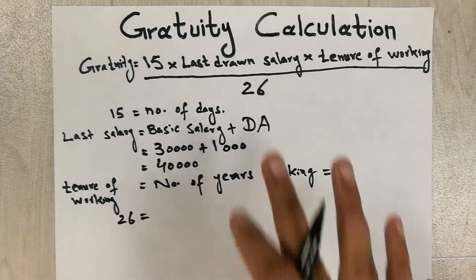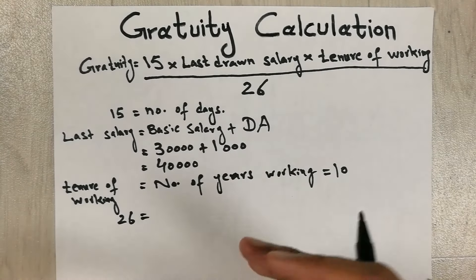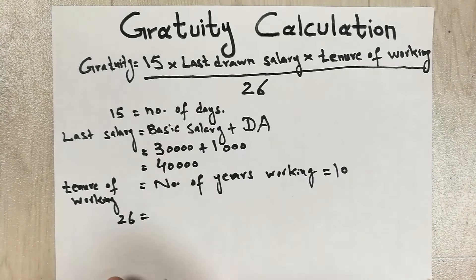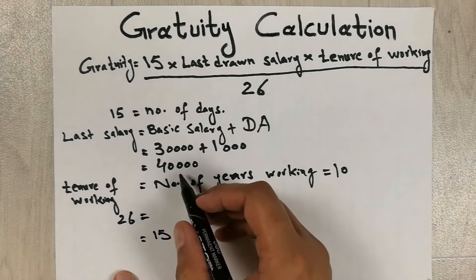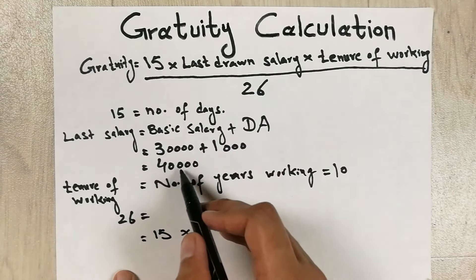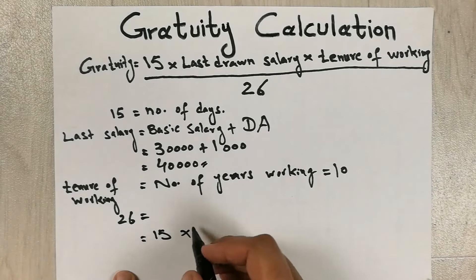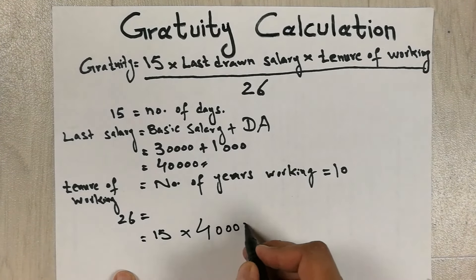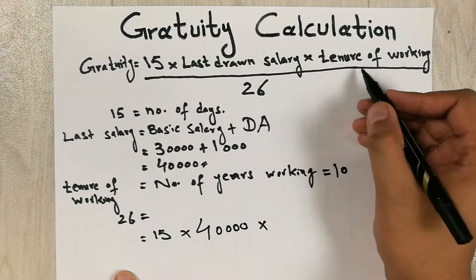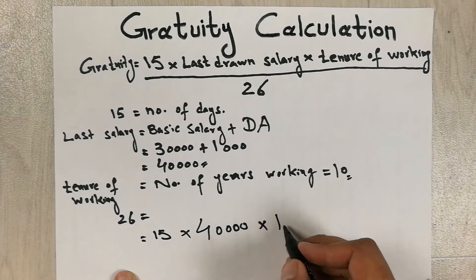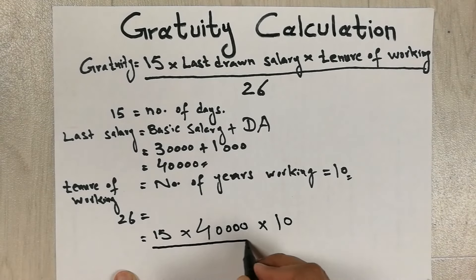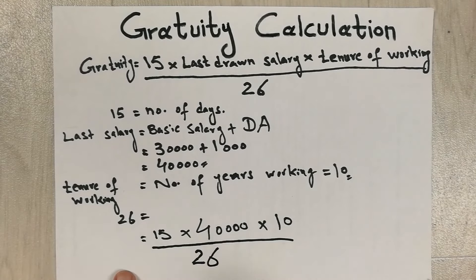Now we have everything, now we will just put the values in this formula. So what we will do is 15 multiply with last drawn salary. Here we already calculated the last drawn salary which is 40,000, so we write here 40,000 and then we multiply it with the tenure of working. We already mentioned here tenure of working is 10, so multiply with 10 and then divide this whole thing with 26.